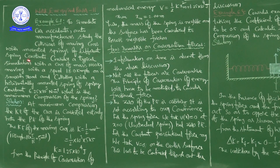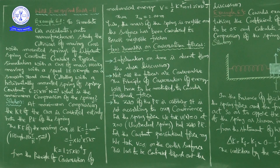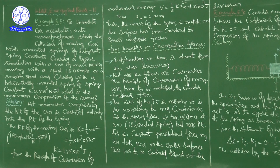Collision is an interaction among bodies in a short interval of time. Here, the collision is between the car and the spring. The car of mass 1000 kg is moving at 18 km/h on a smooth road and colliding with a horizontally mounted spring of spring constant 6.25 × 10³ N/m. We need to find the maximum compression of the spring.